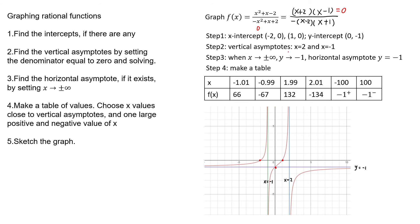Step two: find the vertical asymptotes by setting the denominator equal to zero. We get x = 2 and x = −1, so draw those two asymptotes. Step three: when x approaches infinity, the lower-degree terms are negligible, and the function behaves like x² divided by −x², which equals −1. So the horizontal asymptote is y = −1.